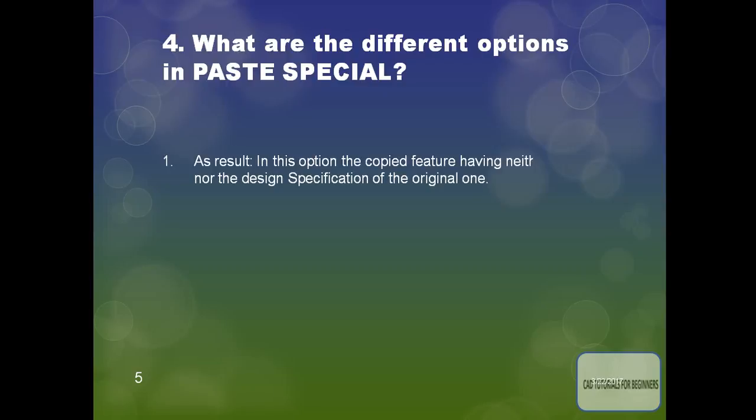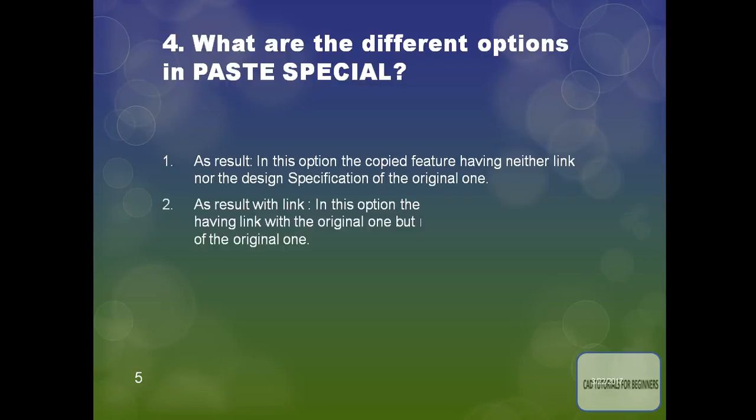What are the different options in the paste special command? The first option, when we paste specially, is 'As Result'. In this option, the copied feature has neither a link nor the design specification of the original one.